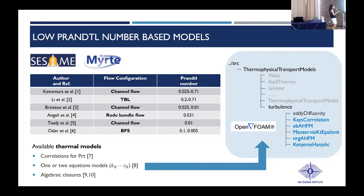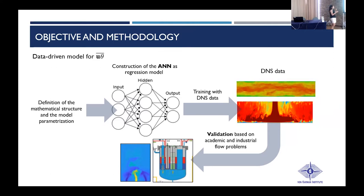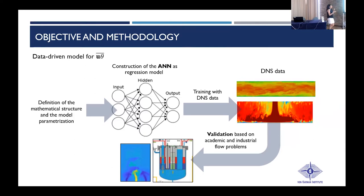On the other hand, we would also like to exploit the enormous amount of information given by the collected data by generating data-driven models for the turbulent heat flux. To do so, we followed the approach presented in this slide: the mathematical structure of the model and its functional parameters were defined by applying physical and mathematical arguments. Then a neural network model was constructed and trained with the available DNS data, and then the model was validated against academic and industrial flow problems.